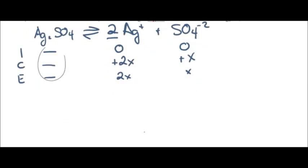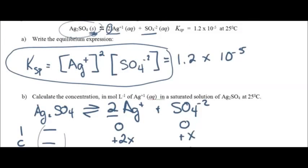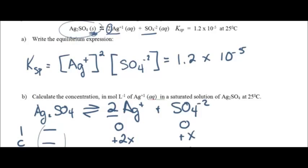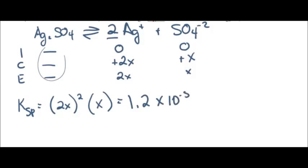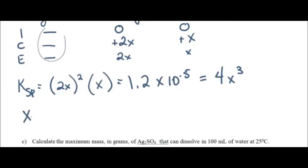Now we plug into our equilibrium expression. KSP equals (2x)² times (x), which equals 1.2 × 10⁻⁵. Taking 2x squared gives 4x², so we have 4x³ = 1.2 × 10⁻⁵. Solving for x: x³ = 1.2 × 10⁻⁵ divided by 4, which gives us 3.0 × 10⁻⁶.